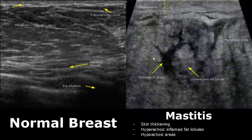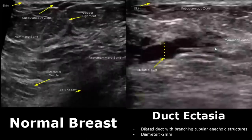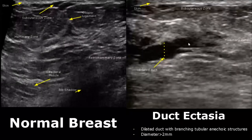Mastitis is the inflammation of breast tissue. Its appearance consists of hyperechoic fat lobules and some hypoechoic areas. Another distinguishing feature is thickened skin — here you can see the skin is very thick compared to the normal image. Duct ectasia involves dilated ducts with branching tubular anechoic structures with diameter measuring more than 2 mm. The normal ducts are somewhat difficult to visualize and usually have mixed echoes.